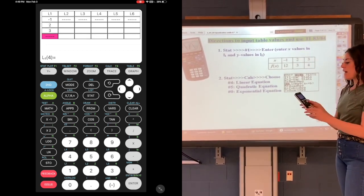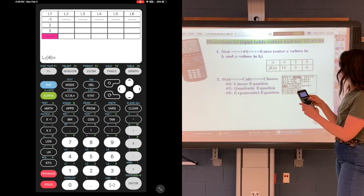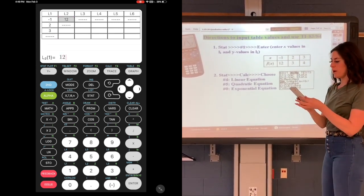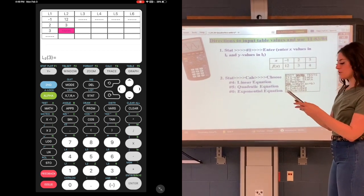Three, enter. And then go to the right arrow. Then you're in list two or L2. I'm going to put in 12, three, and four. So 12, enter. Three, enter. And four, enter.